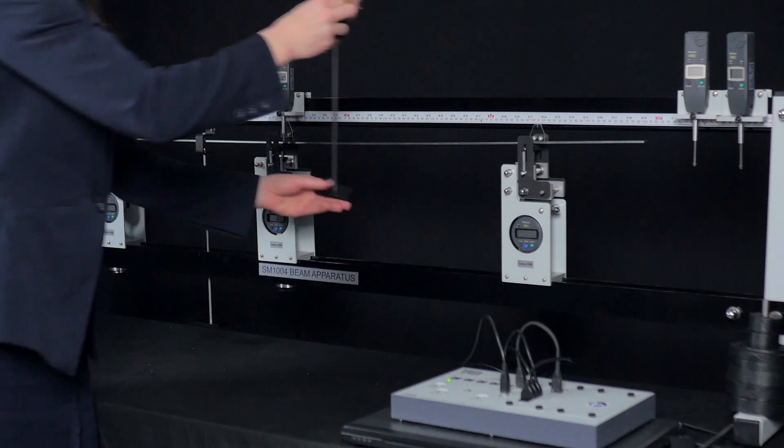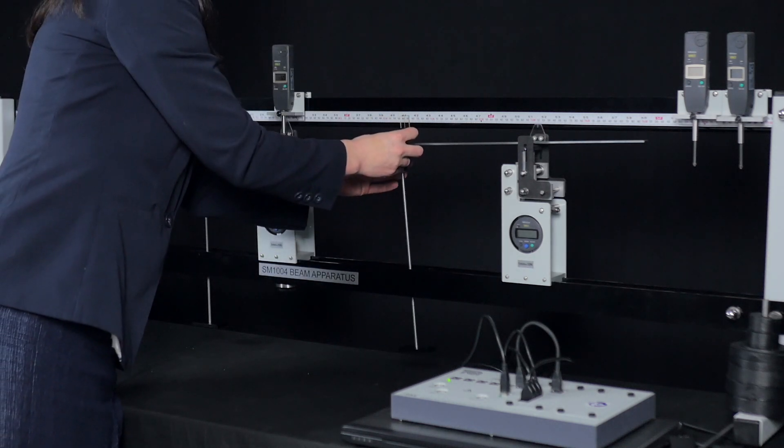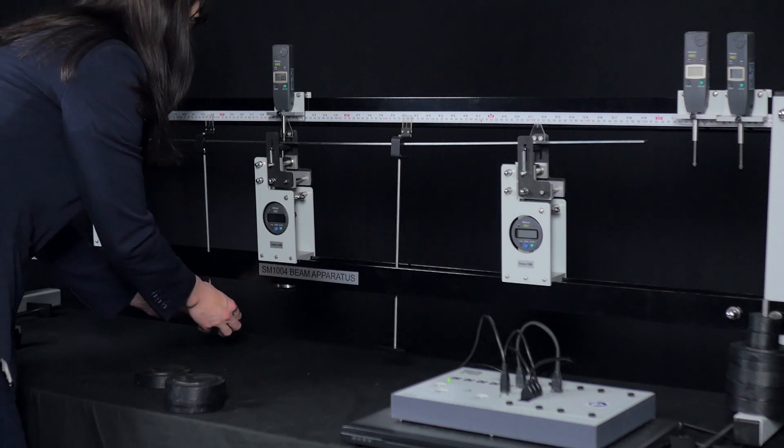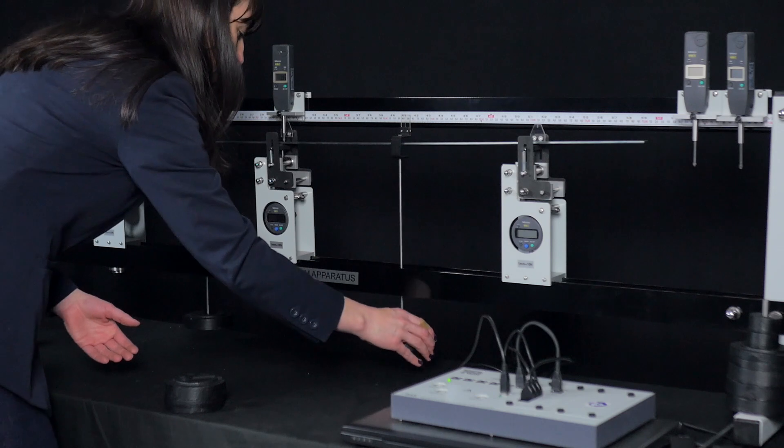For more complicated experiments, students use several weight hangers to apply loads at multiple points along the beam at the same time. The load cells can be used to support and measure the reaction forces.